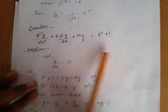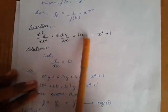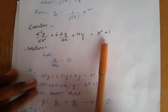Now, we have a question. d²y/dx² plus 6 dy/dx plus 4y equals to x² plus 1.